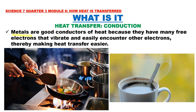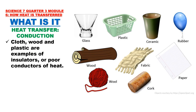Metals are good conductors of heat because they have many free electrons that vibrate and easily encounter other electrons, thereby making heat transfer easier. One example of good conductors of heat are metal pots and pans. The two most common metals used in commercial cookware are aluminum and stainless steel. Another example of a good conductor of heat is a metal spoon. On the other hand, insulators are poor conductors of heat. Some examples of insulators are glass, plastic, ceramic, rubber, paper, cork, fabric, wool, and wood. All of these examples conduct heat poorly and are called insulators.